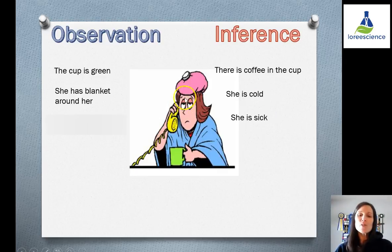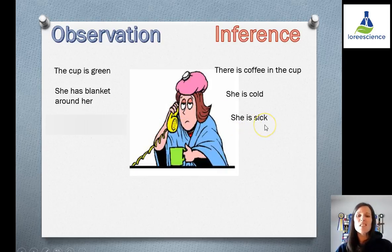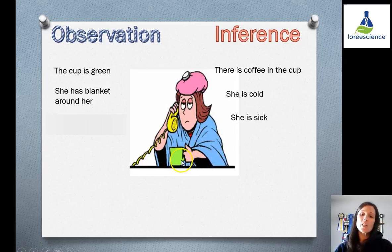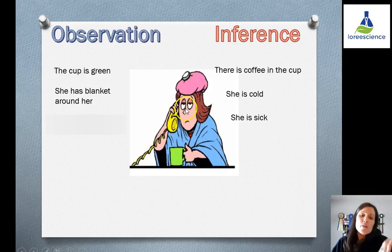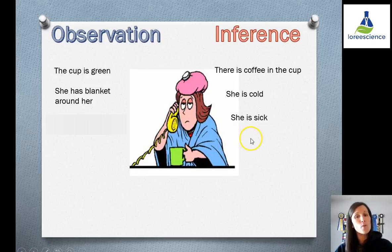Because her eyes are partially closed, we might think that she is sick, because of other things we see in this picture — the fact that she has a mug, she has a blanket, her eyes are partly closed. We might assume that she is sick, but we don't know that for sure. So that is an inference.